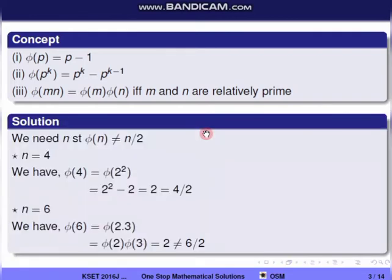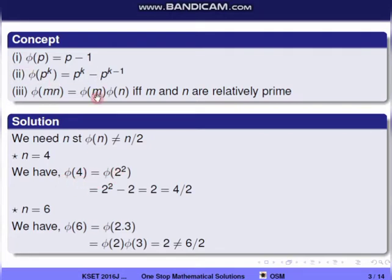Now let's check the options to find n where φ(n) ≠ n/2. We check n = 4: φ(4) = φ(2²) = 2² − 2 = 2, and n/2 = 4/2 = 2. So φ(4) = n/2, meaning n = 4 satisfies equality.